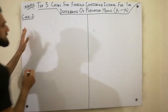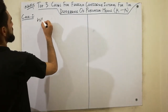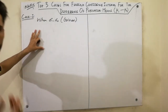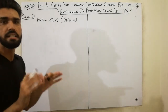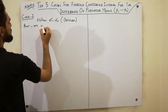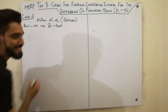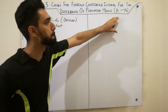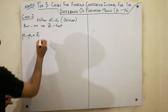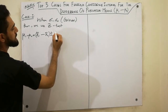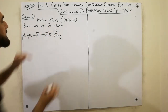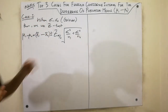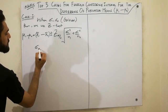Let's start with the first case. The first case is when σ1 and σ2 are given. When σ1 and σ2 are given in the problem, we use the Z-test. The formula is: μ1 minus μ2 equals X1-bar minus X2-bar plus or minus Z-alpha/2 times the square root of σ1² divided by n1 plus σ2² divided by n2.